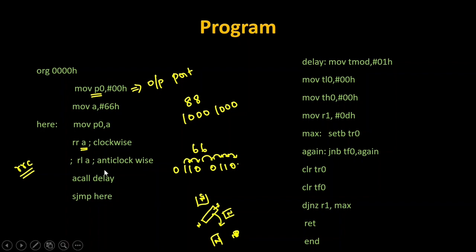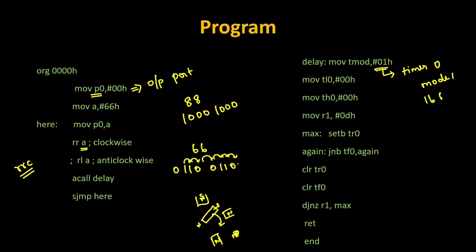After the rotation, we call the delay subroutine. In the delay program, the TMOD register gets the value 0x01, activating Timer 0 in Mode 1 — 16-bit timer mode. TL0 and TH0 are set to 0x00, the minimum value. Then R1 is loaded with 0x0D (decimal 14), meaning the loop will repeat 14 times. Setting TR0 starts the count from 0x0000 up to 0xFFFF. When 0xFFFF is reached, the overflow flag TF0 is set. Until TF0 is set, the program waits — this is the polling method, repeatedly checking TF0.